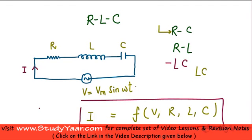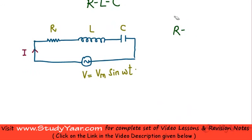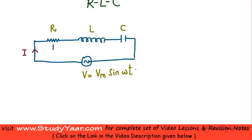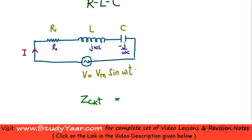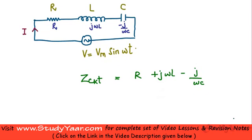We are looking for the function of V, R, L, and C that determines the current at any given time in this circuit. The current is simply voltage divided by the impedance. The impedance of the resistor is simply R; the impedance of the inductor is j omega L; and the impedance of the capacitor is minus j upon omega C. The net impedance of this circuit is R plus j omega L minus j upon omega C.